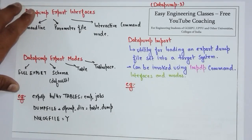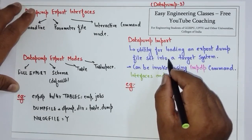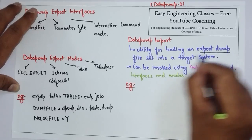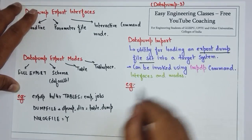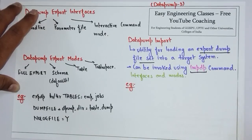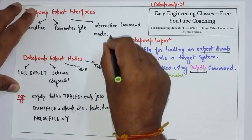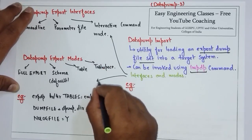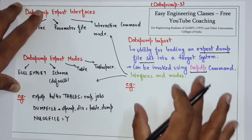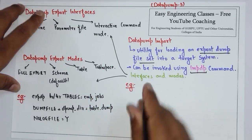Data Pump Import is also very similar. The difference is it is used as a utility for loading an export dump file set into a target system, and it is invoked with the impdp command. The interfaces and modes are exactly the same as for Data Pump Export, so those are not repeated. Let's see an example of Data Pump Import.